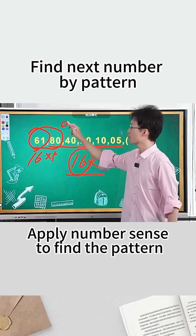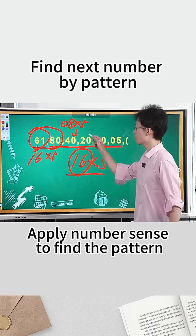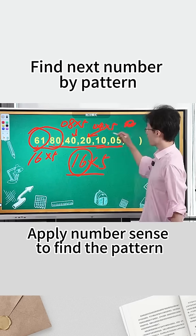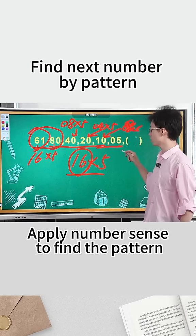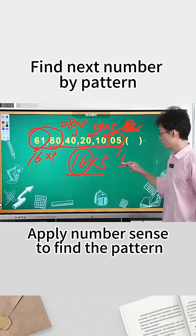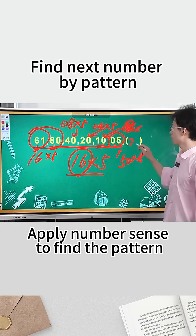Reverse 80 to equal 08. 08 times 5 equals 40. Turning 40 upside down equals 04. 04 multiplied by 5 equals 20. Turning 20 upside down equals 02. 02 multiplied by 5 equals 10. Turning 10 upside down equals 01. Multiplied by 5 equals 0.5. So turning 0.5 upside down equals 50. So it should be written as 0.5 instead of 5. 50 multiplied by 5 equals 250.